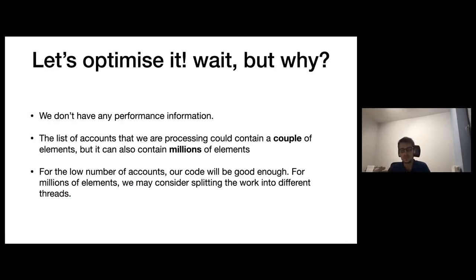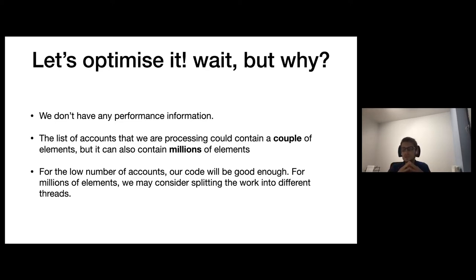We created this code as the first approach, and it's important to note that we don't have any performance information at this point. The list of accounts we are processing could contain a couple of elements, but it can also contain millions of elements. Without this knowledge, it's hard to optimize performance. For a low number of accounts, our code will be good enough. For millions of elements, we may consider splitting the work into different threads — either by creating those threads manually, splitting work into batches, or leveraging existing mechanisms like parallel streams.